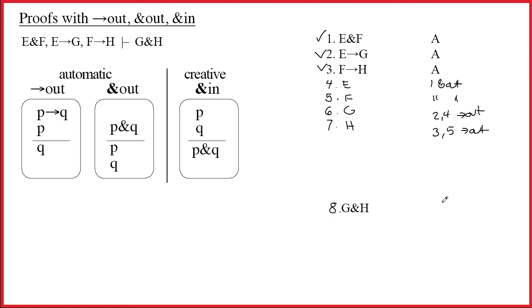Call this line eight. And the justification will be six, comma, seven. And the rule, ampersand in. And we are done. Simple proof. Well, let's try to improve.